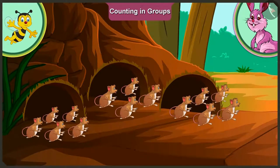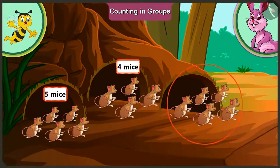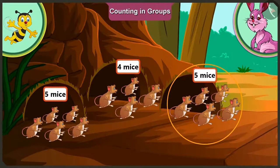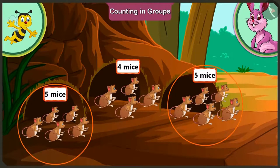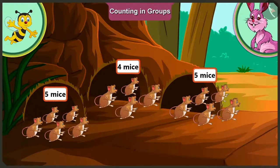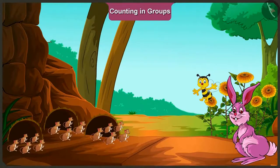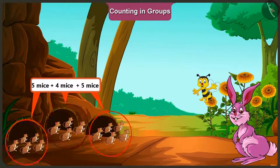There are five mice in the first group, four in the second group, and five in the third group. That means there are two groups with five mice each and one group with four mice. So how many mice would there be in total? We will add the number of mice in all three groups.